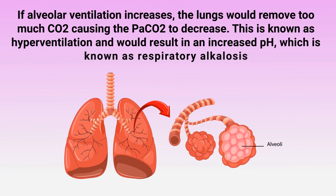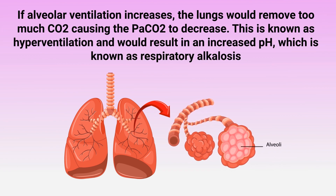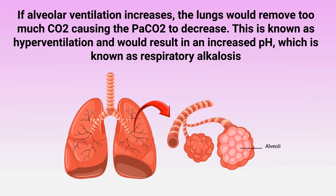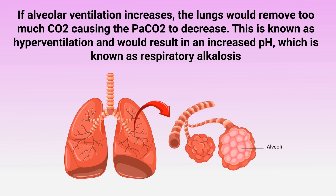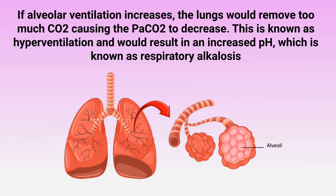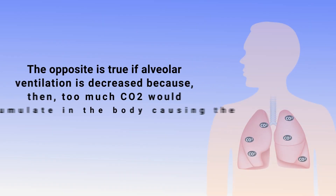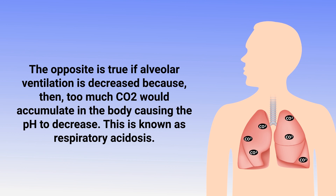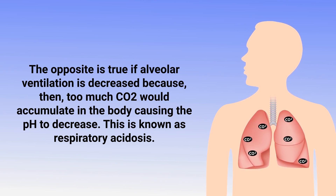For example, if alveolar ventilation increases, the lungs would remove too much CO2, causing the PaCO2 to decrease. This is known as hyperventilation and would result in an increased pH, which is known as respiratory alkalosis. The opposite is true if alveolar ventilation is decreased, because then too much CO2 would accumulate in the body, causing the pH to decrease — this is known as respiratory acidosis.